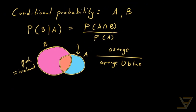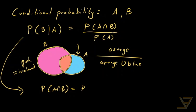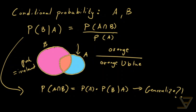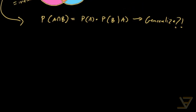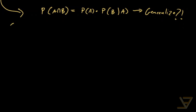If we take this equation and clear the denominator, we find that P of A intersect B is equal to P of A times P of B given A. It's natural to ask: does this generalize? And that's what we're going to do here — we're going to be generalizing this to the chain rule.